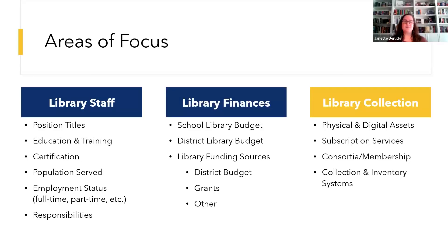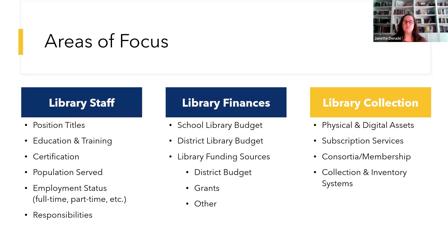We're additionally exploring programs like book fairs and other events specifically intended to provide materials and resources for libraries. Finally, the last category is library collections. This includes physical and digital assets owned by the school library, subscription services or memberships to increase access to content and the types of content included, and how those resources are scoped based on student population. This connects to the library finance data, because we're also considering what portion of the library's financial resources are dedicated to those programs and how we can support them. We're also exploring the systems libraries are using to track and report their inventory and collections.